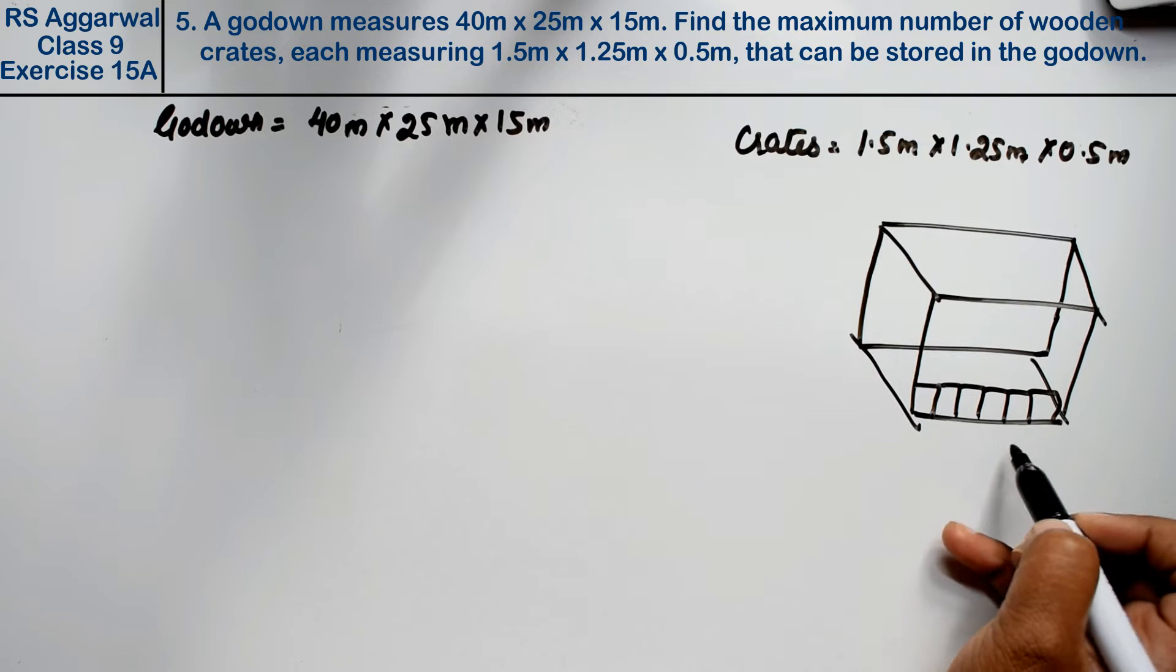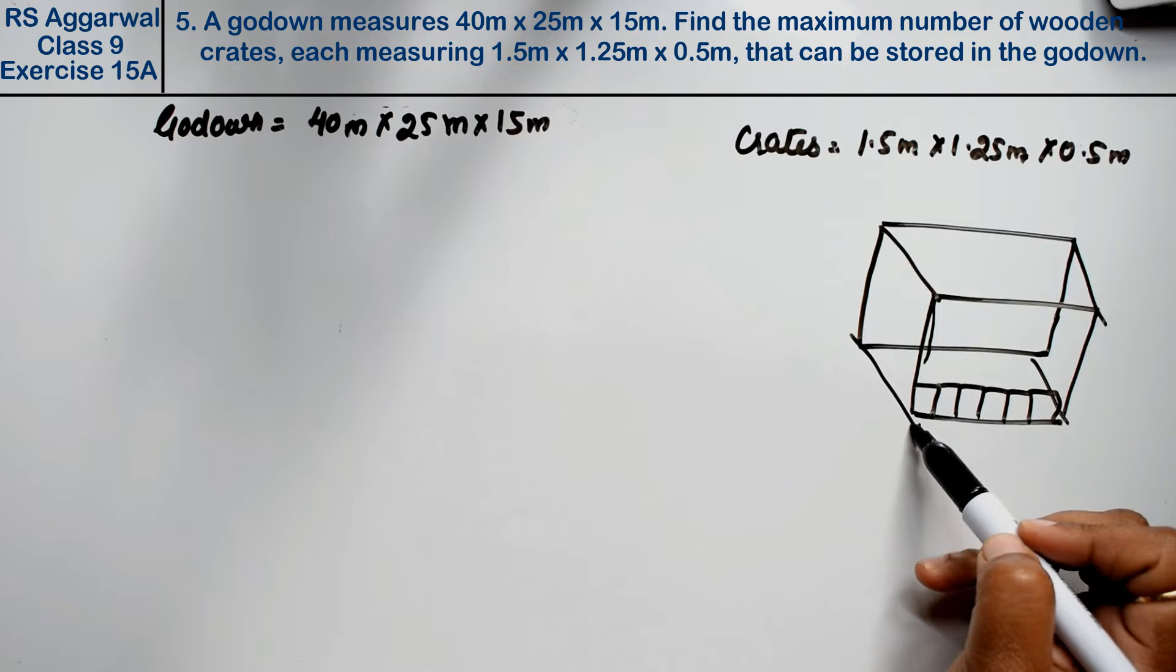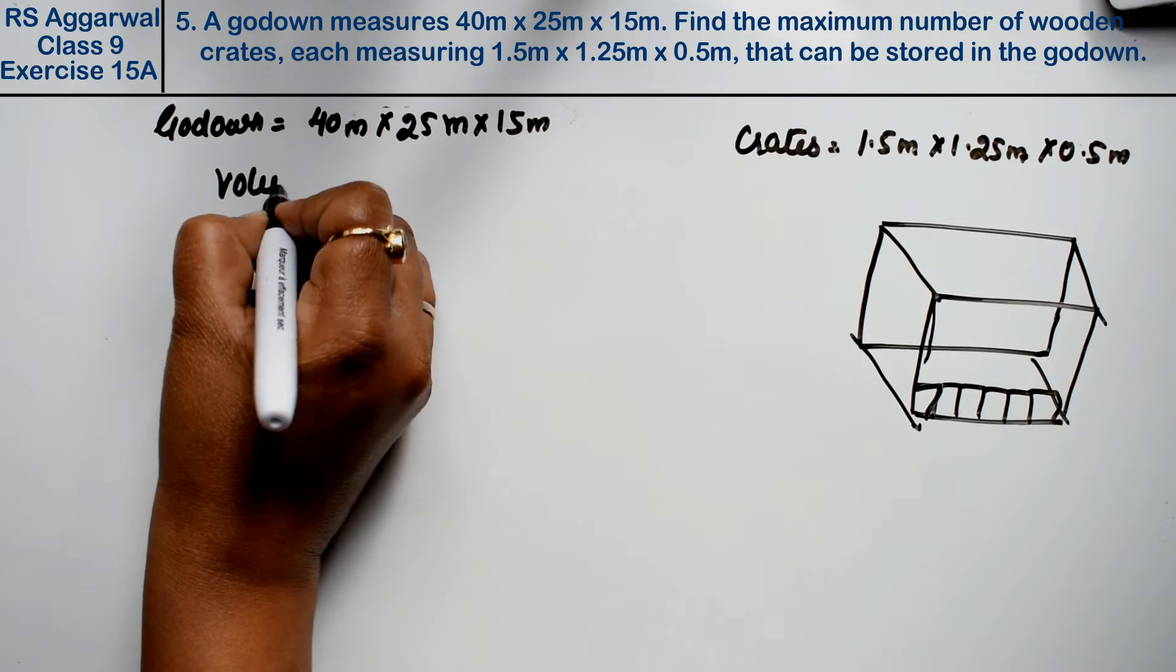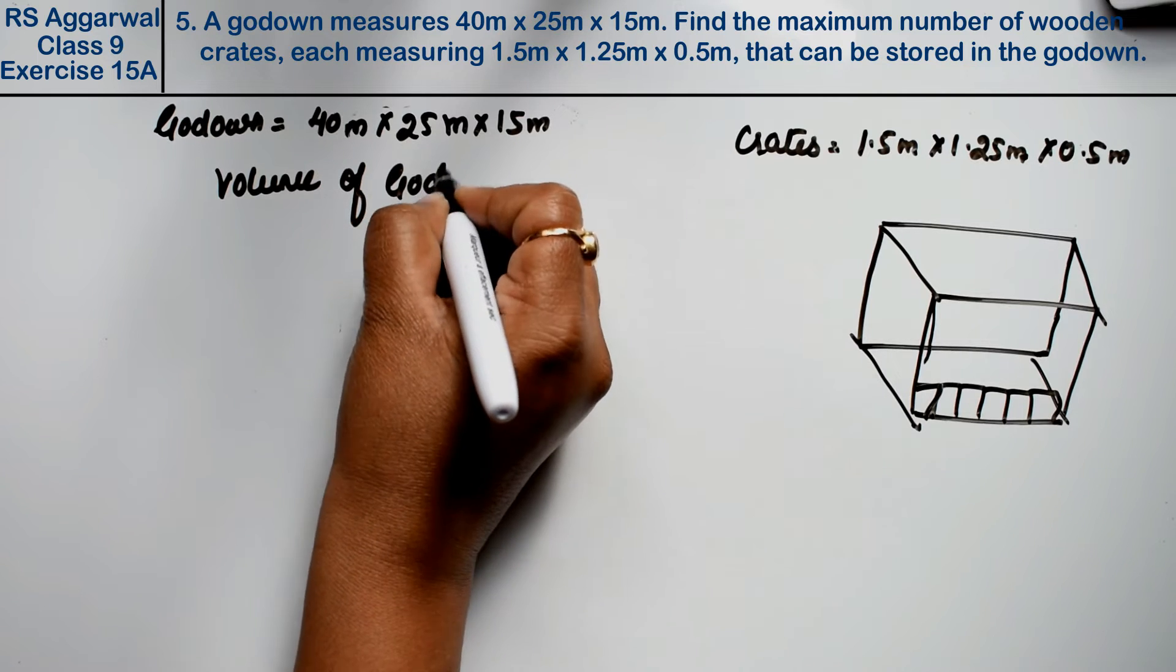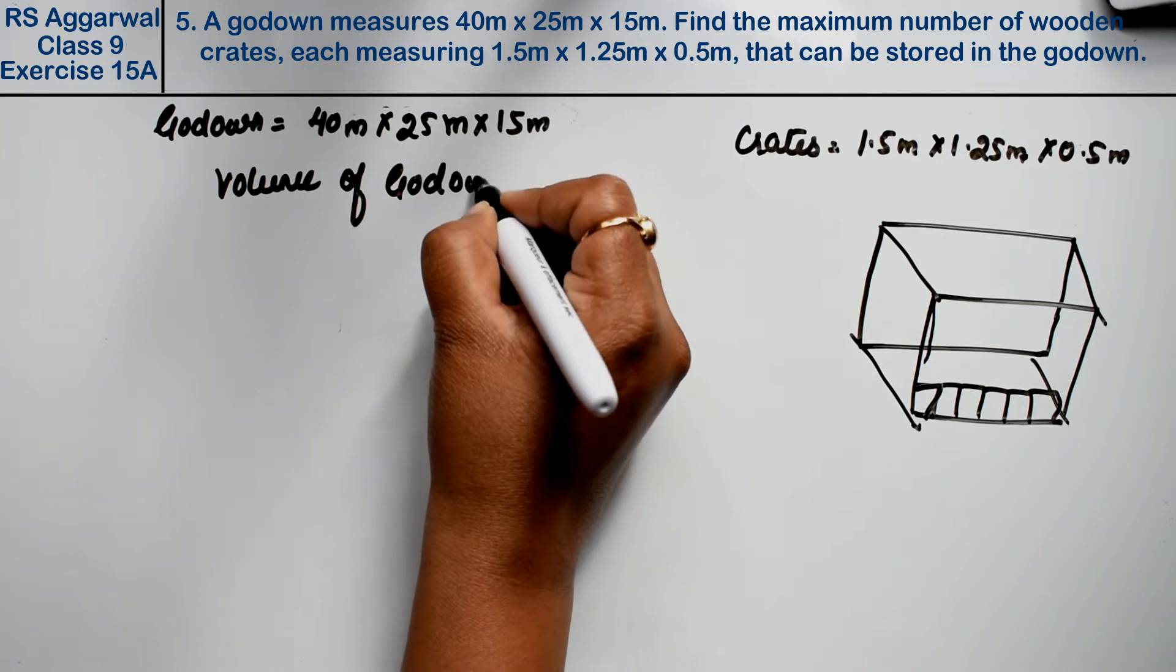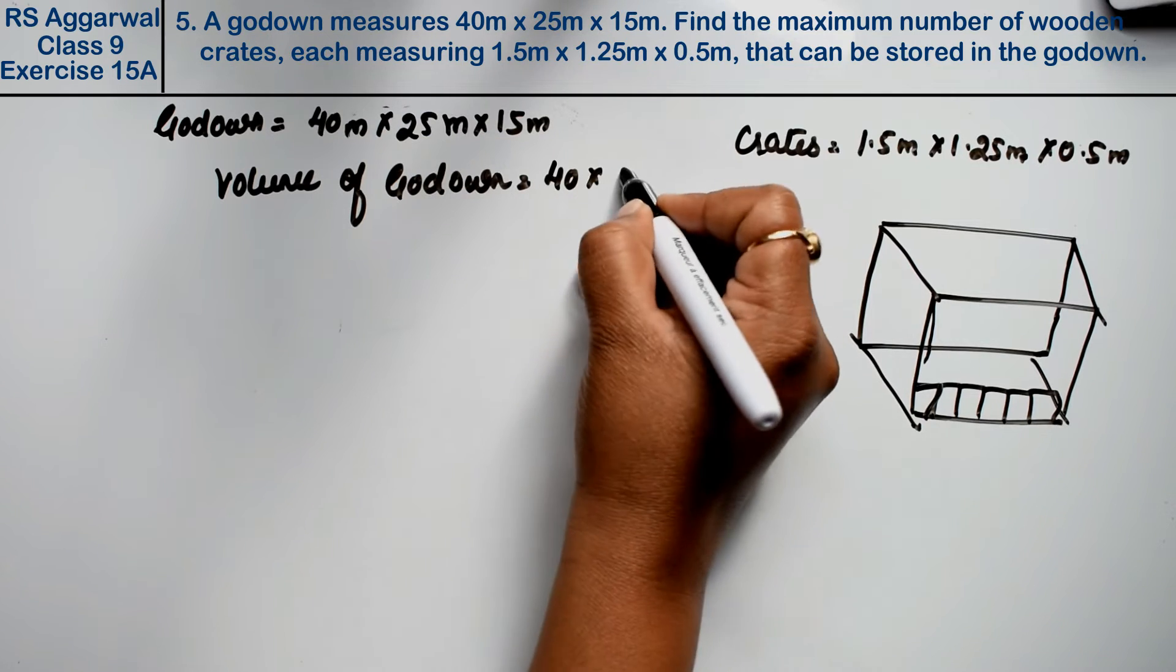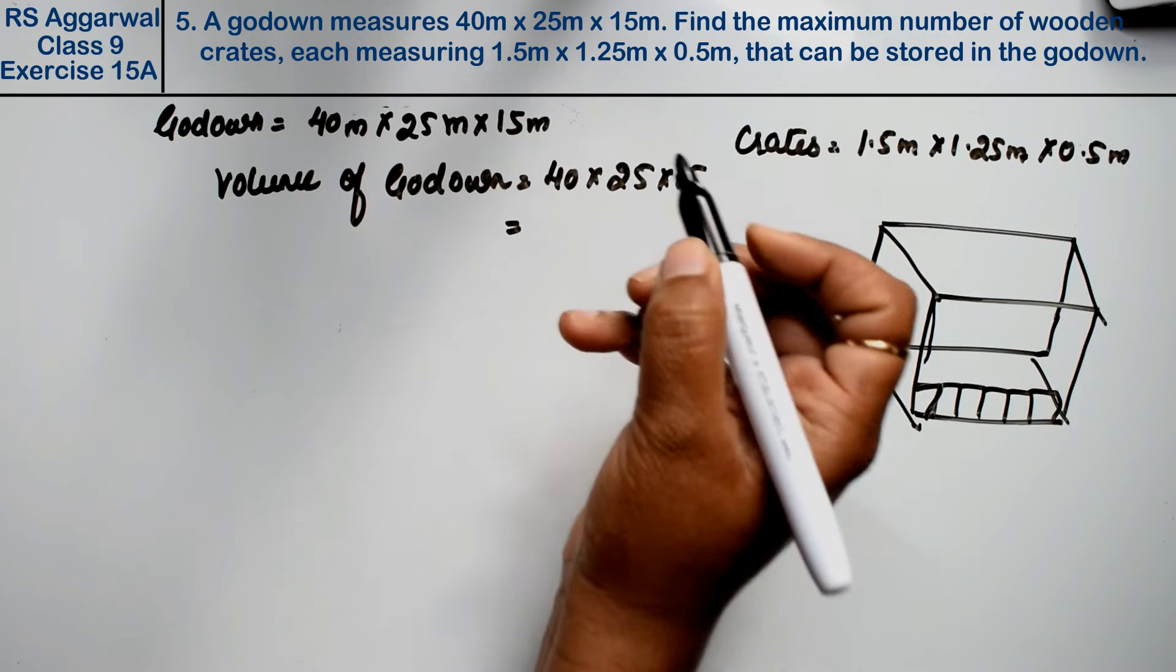How can we do this? First, we take the large volume, then the small volume, and divide. Volume of godown: 40 × 25 × 15, which equals 15,000 cubic meters.